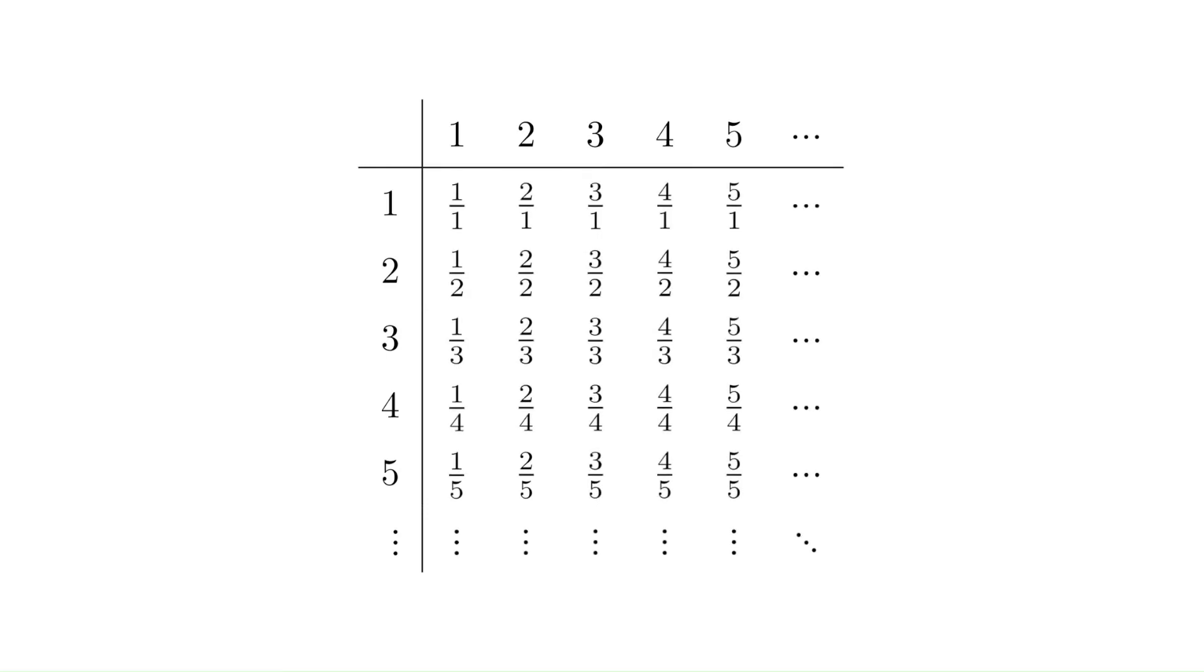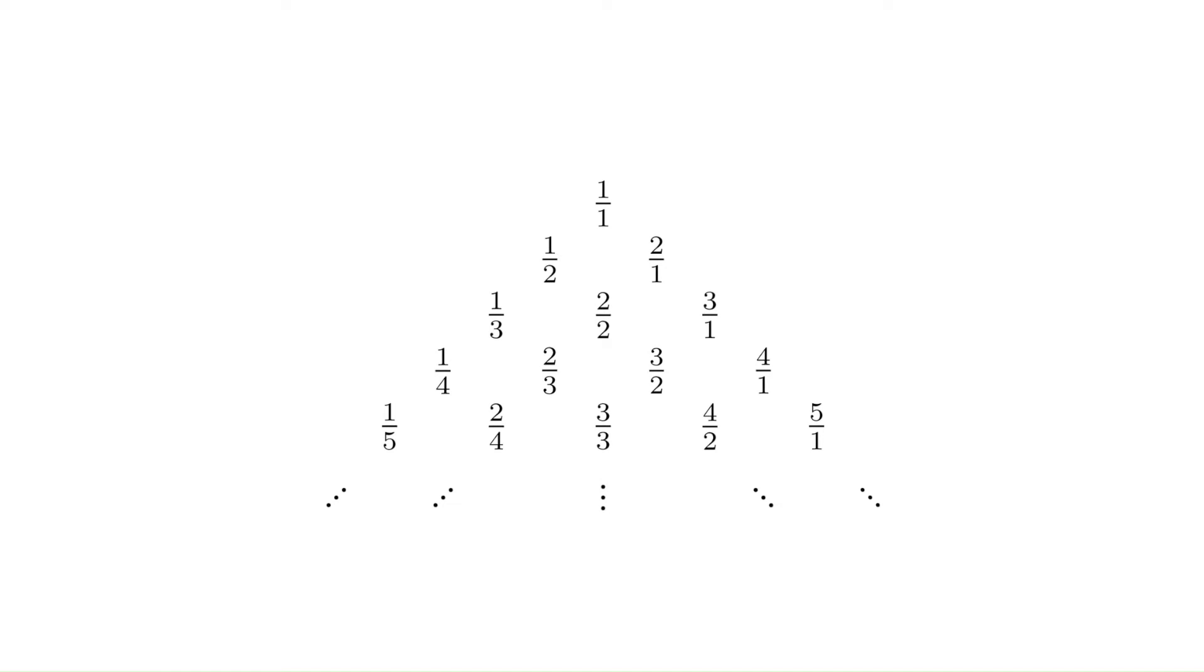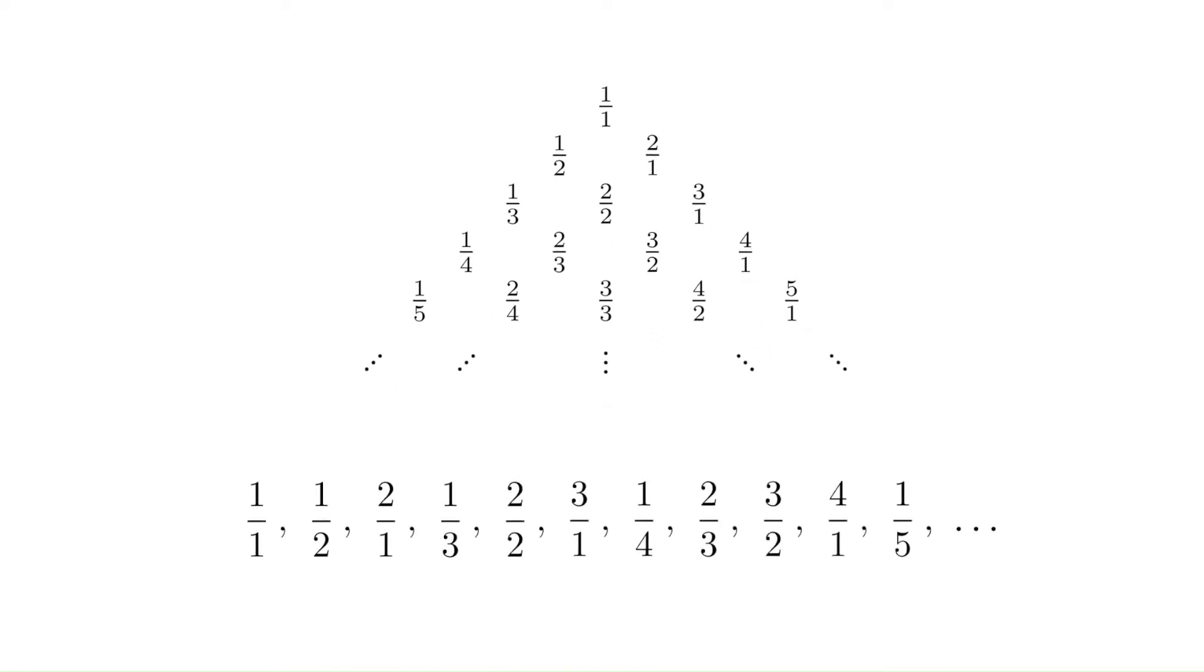The traditional method is to create a table. In each entry, we write the fraction whose column number and row number are the numerator and denominator. Doing this for every entry produces a grid which contains all possible fractions, so we are sure not to miss any. We can rotate the table 45 degrees, then read the fractions one row at a time to produce a list with every rational number.